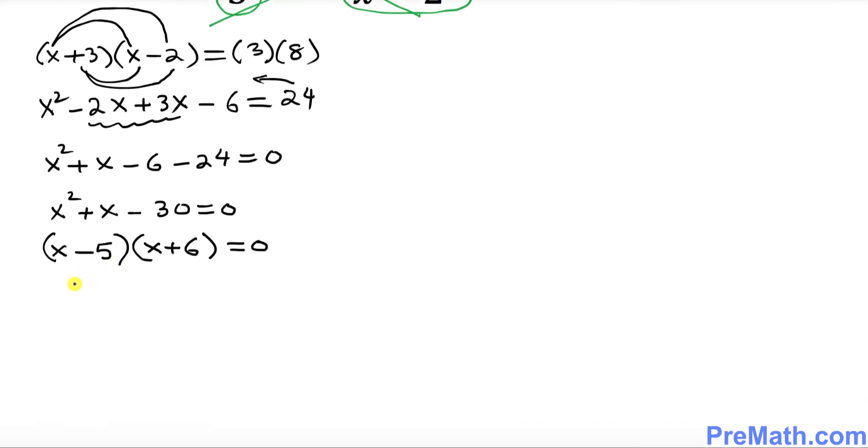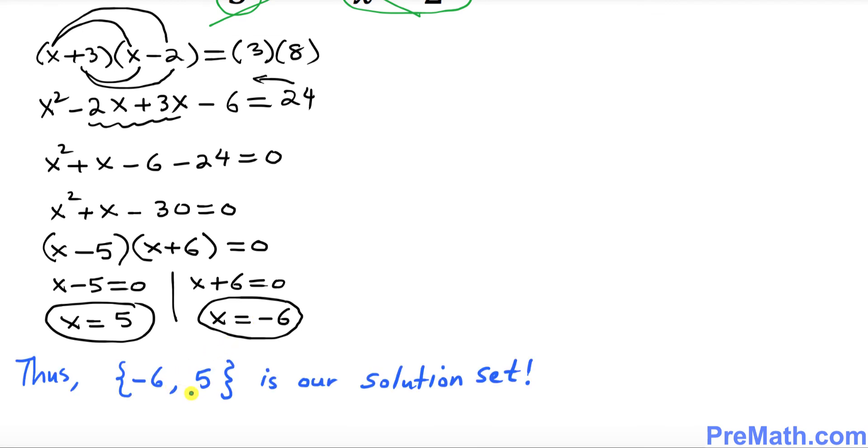I can write x minus 5 equal to zero and the other is x plus 6 equal to zero. That means x equal to positive 5 is one of our solutions, and x equal to negative 6 is another solution. Thus negative 6 and positive 5 is our solution set, and that's our answer.